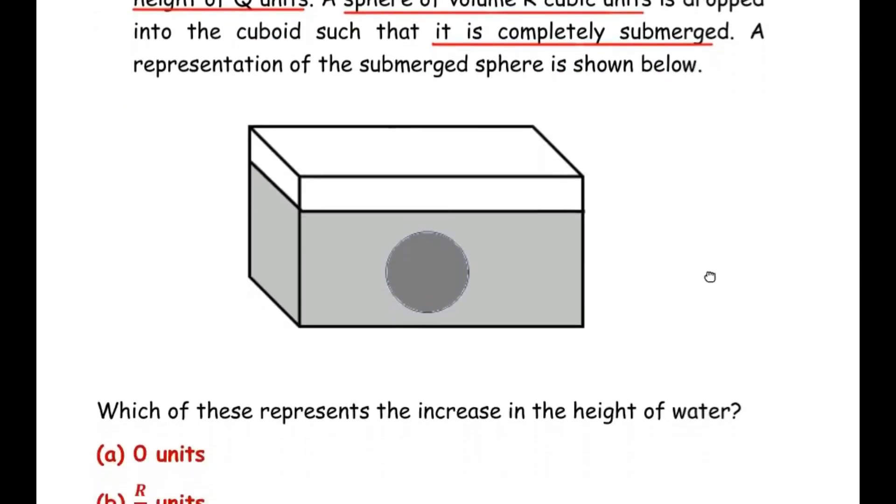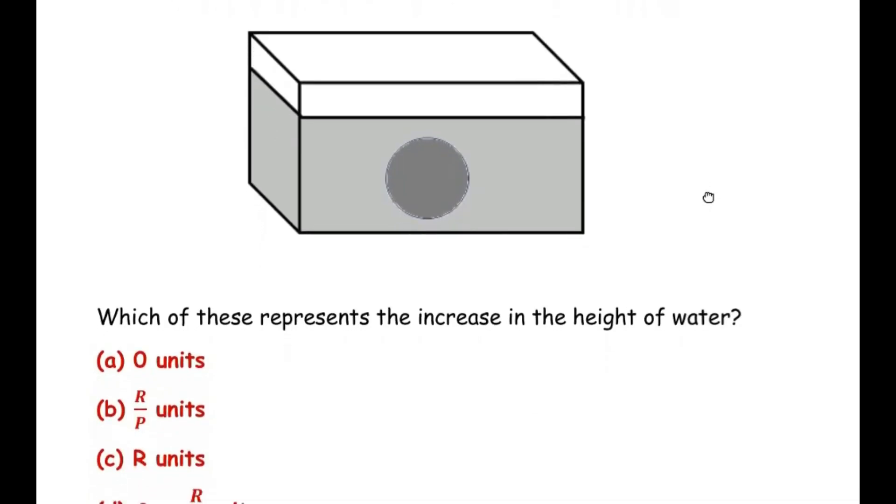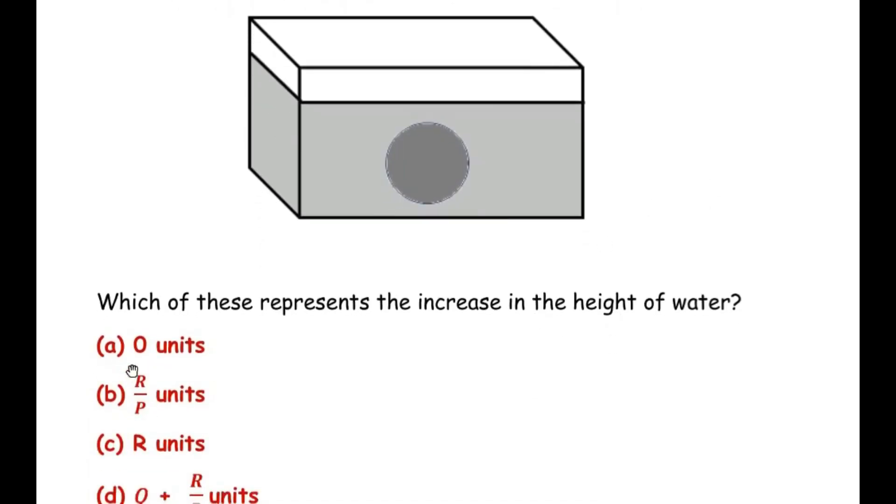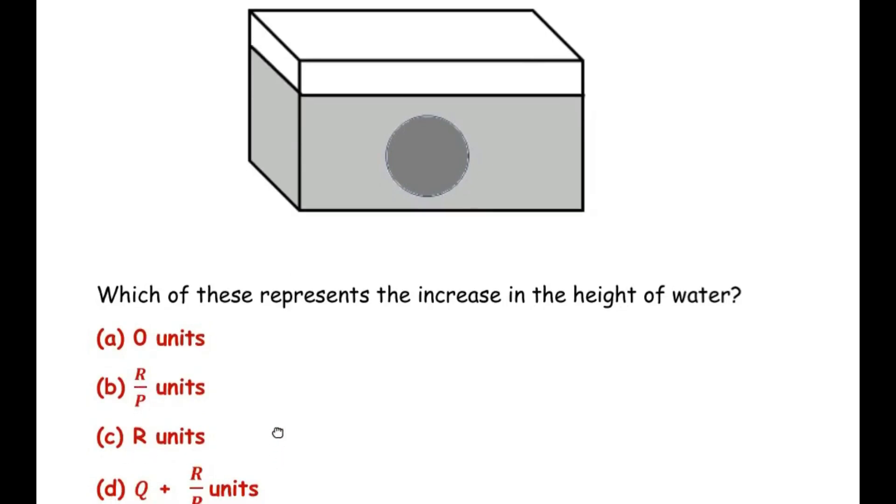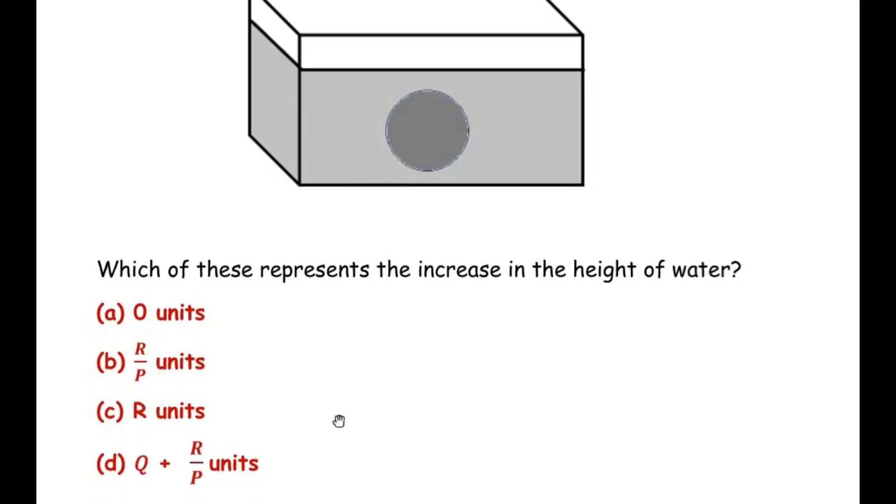Which of these represents the increase in the height of water? Is it 0 units, R over P units, R units, or Q plus R over P units?